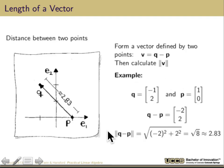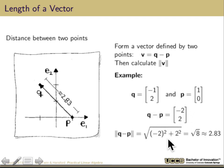The length of a vector also relates to the distance between two points. The difference between two points p and q gives us v. We can use that to estimate the distance between the two points — take the square root of v1 squared plus v2 squared. For example, if q minus p is (−2, 2), that gives us √(4 + 4) = √8 ≈ 2.83. So the length of the vector is the same as the distance between those two points.